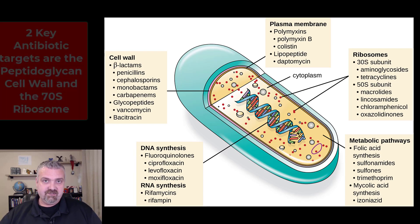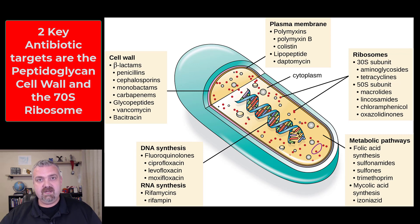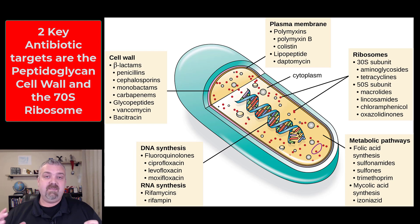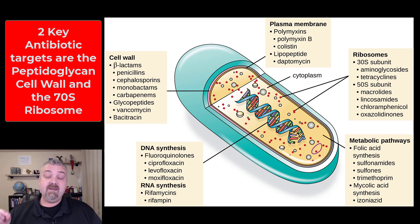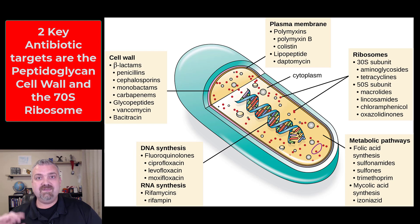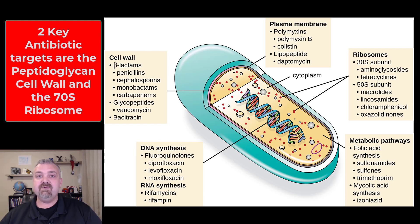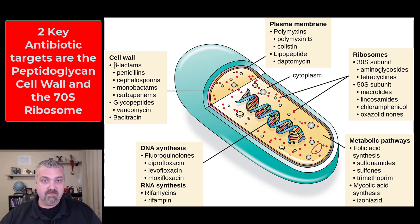A real quick refresher: when you learned about the structure and function of bacteria, remember the two key differences we exploit are that bacteria have peptidoglycan cell walls and our cells don't, and bacteria have a different shaped ribosome. Most of our ribosomes are the 80S eukaryotic ribosomes — not counting the ones in our mitochondria — while bacteria have 70S ribosomes. So the two key players are antibiotics that disrupt cell wall production and antibiotics that inhibit the 70S ribosome of bacteria.